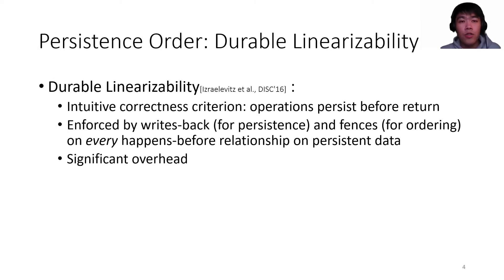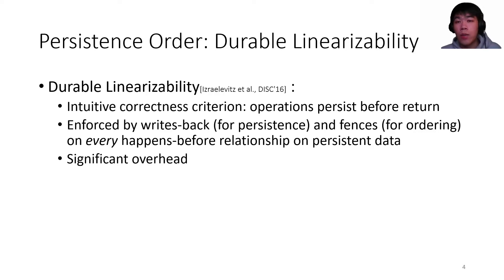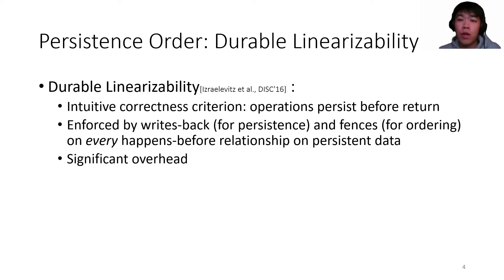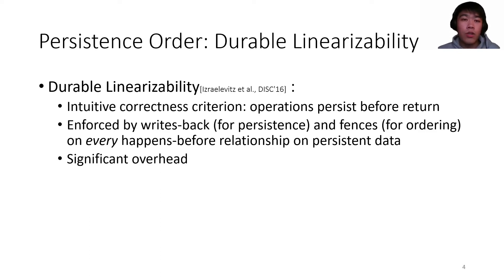Let's start with introducing rules of persist ordering. As an intuitive and widely used correctness criterion, Durable Linearizability requires operations to persist before they return. This gives us the strongest recoverability in the sense that, in the wake of a crash, data structures can be recovered to the last finished operation before the crash. But the downside is that write-back and fences are issued to wait for all updates to NVM to finish before their corresponding operations return, which can be quite expensive.